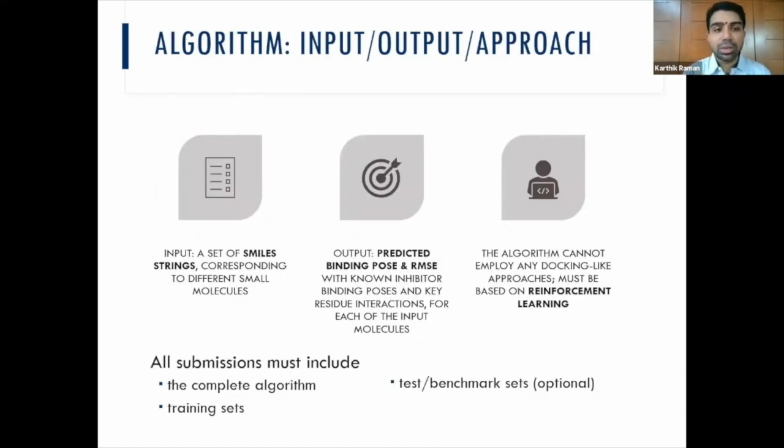So what are the inputs to your algorithm? We will give you a set of SMILES strings corresponding to different small molecules. As output, we want the predicted binding pose and the RMSE with the known inhibitor binding poses, and key residue interactions for each of the input molecules. Note that your algorithm cannot apply any docking-based principle. It has to be solely based on reinforcement learning.